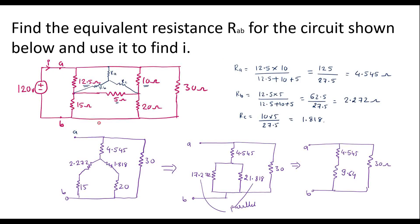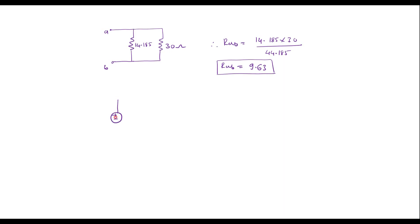So now I will come back to this circuit. We have 120 volt voltage source. This resistor is nothing but RAB, that is 9.63 ohm, and we know that current I is flowing. Therefore, I is equal to 120 divided by 9.63, that is 12.45 amps. This is the required current. Thank you for watching.